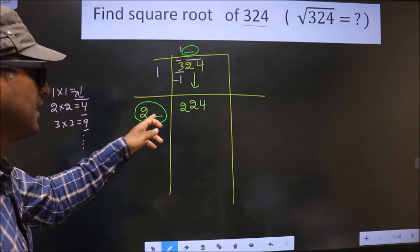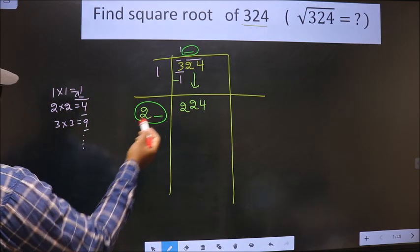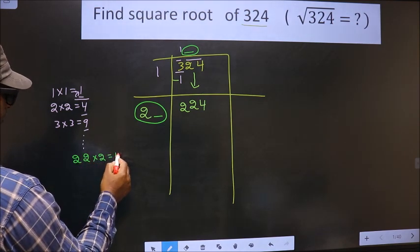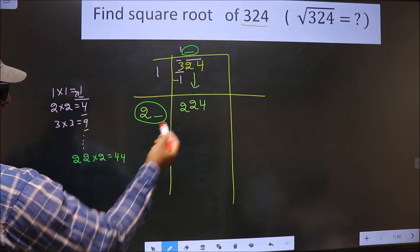Let us find the number here. If we take 2, then 22 into 2 will be 44. This is far away from this.